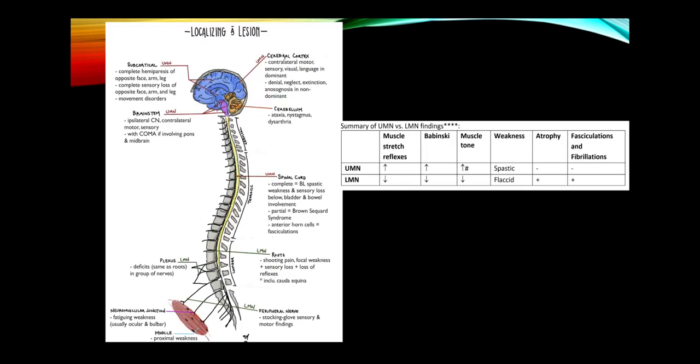When we think about the nervous system, the neuroaxis goes from the cortex all the way out through muscle. Localizing lesions is certainly one of the most important things you want to be able to do coming into the Step 1 examination. You need to understand the neurologic examination — for example, upper versus lower motor neuron findings. That's really key.